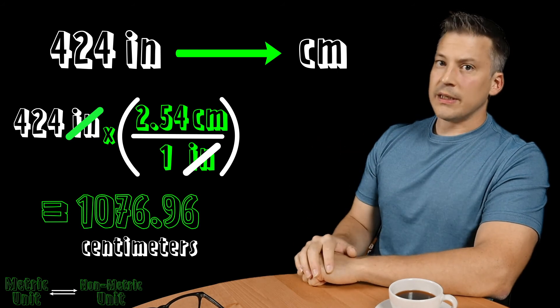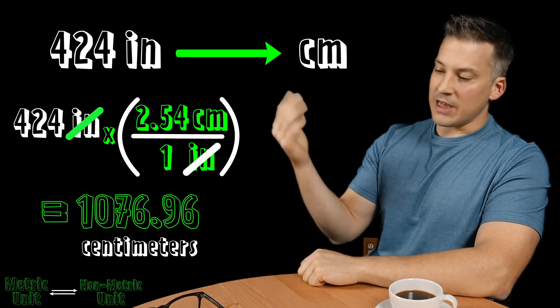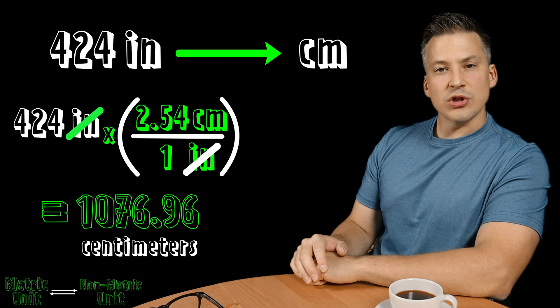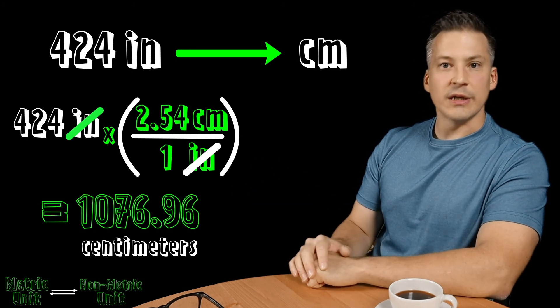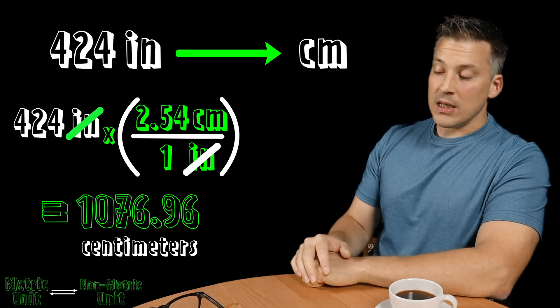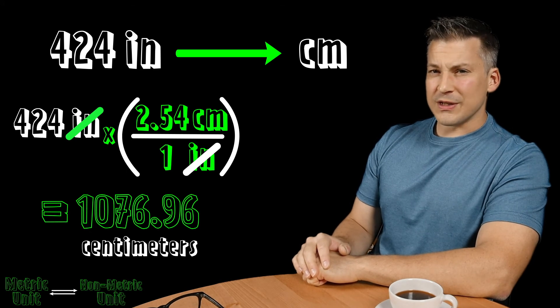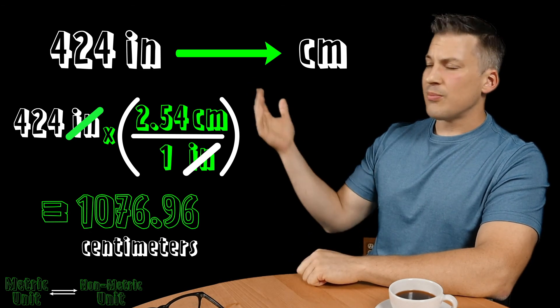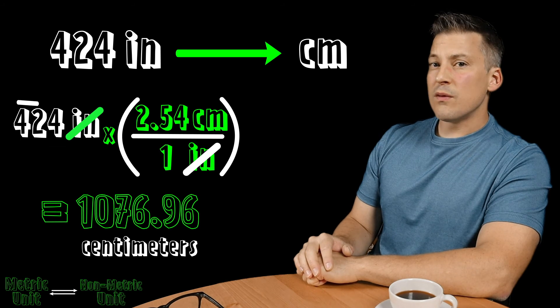And by the way now, be careful. You always have to remember sig figs, just like we had to remember it in the prior conversion as well, metric to metric, although I didn't mention it because we kept the 2.5 the same. But you have to have the appropriate number of significant figures. So if I started the problem here with 424 inches, that's three significant figures.